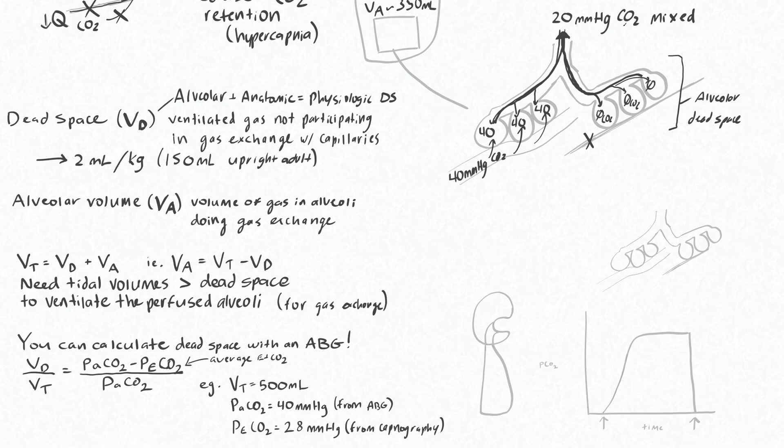Knowing that dead space causes a gap between expired CO2 concentration and arterial CO2 concentration, you can actually calculate what the dead space is if you get an ABG.